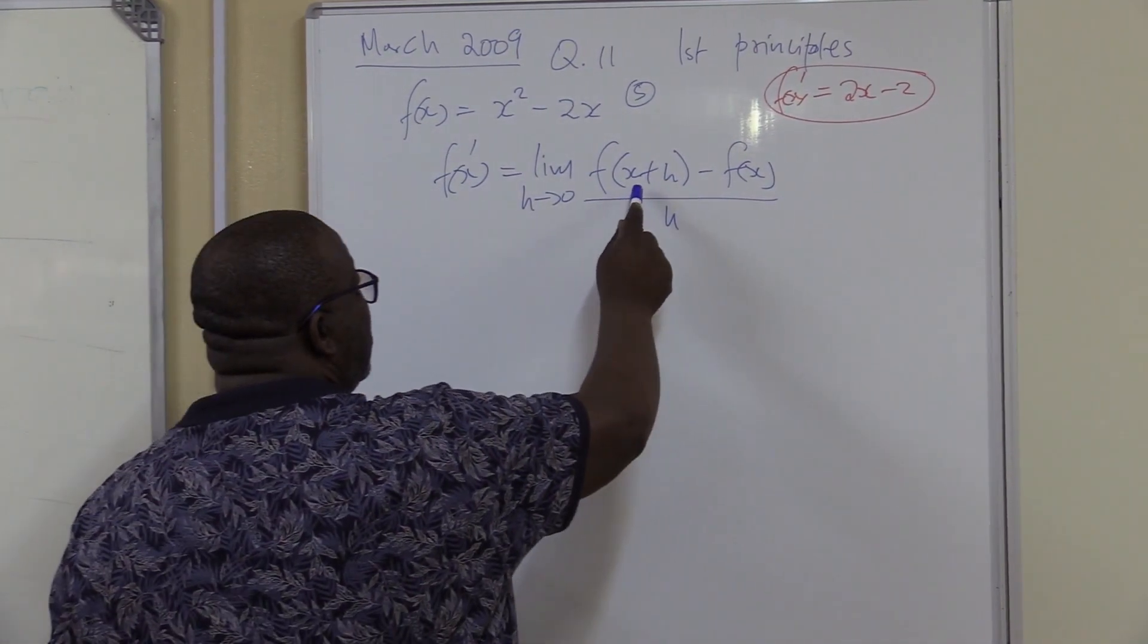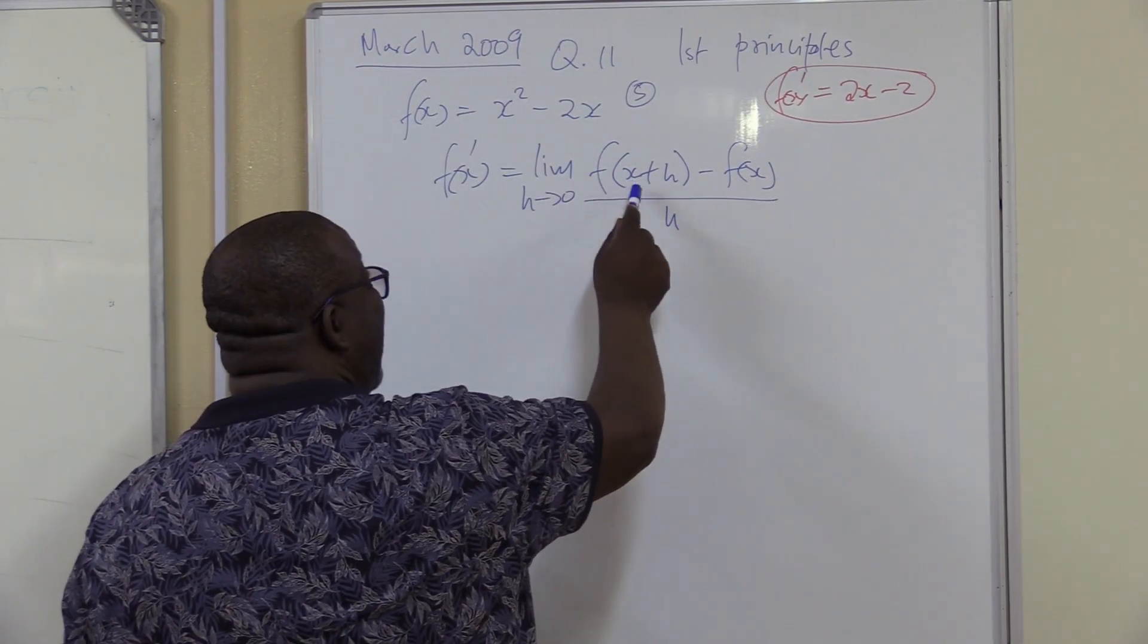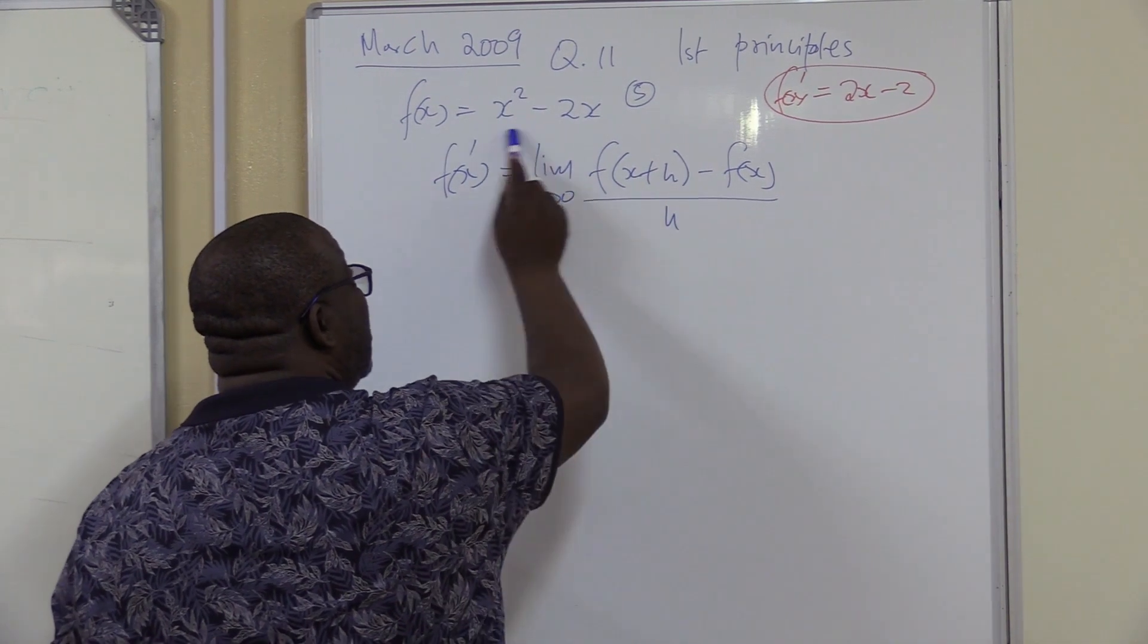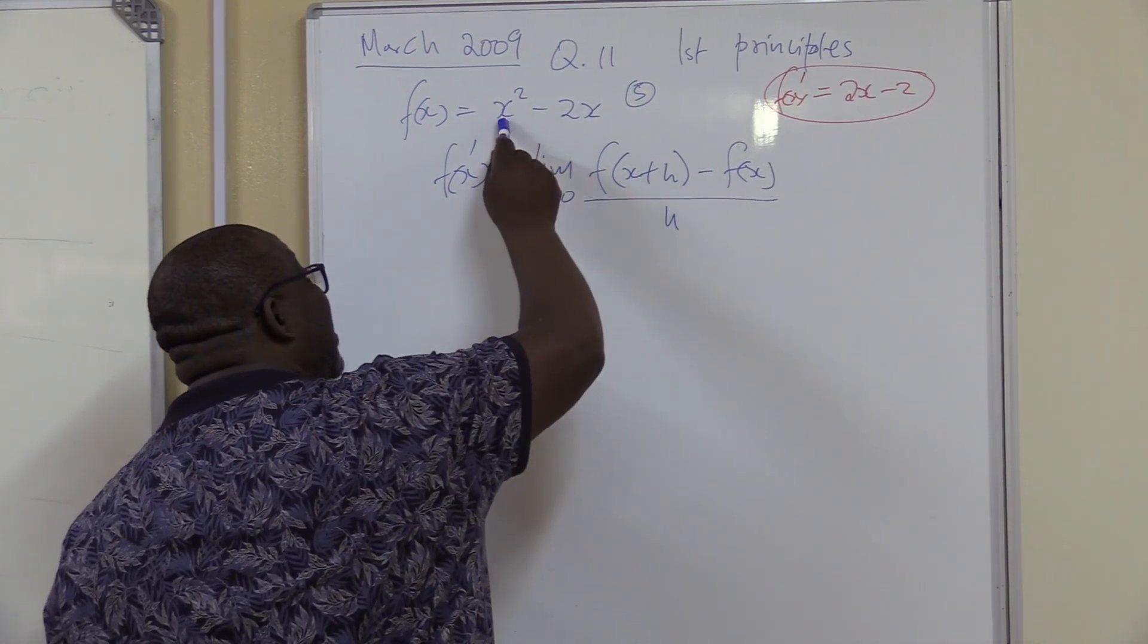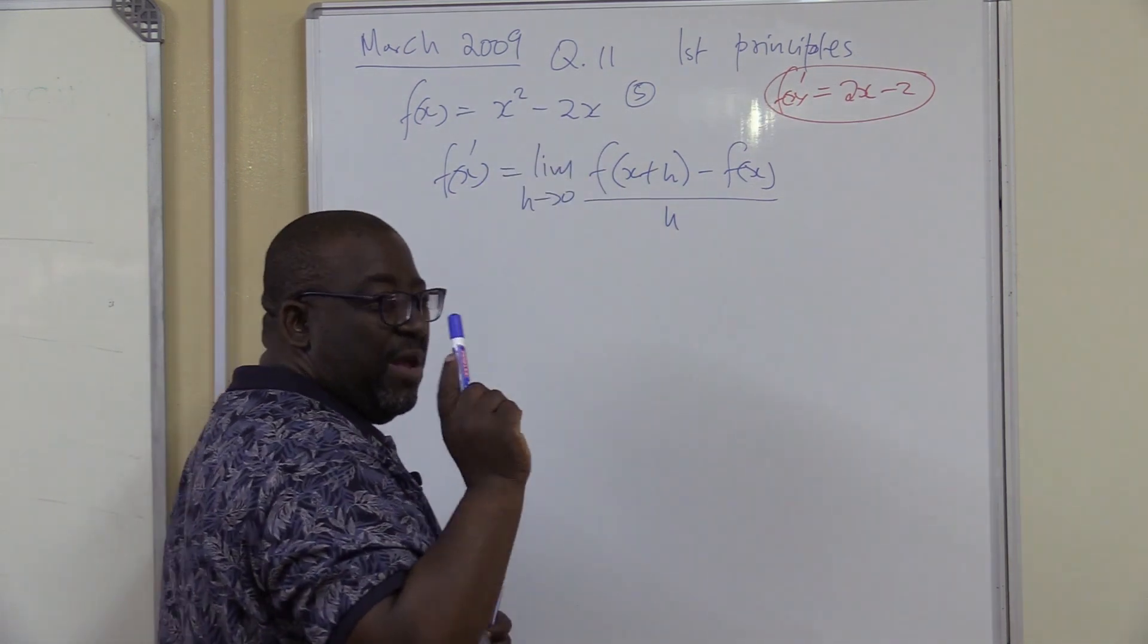Remember, the first thing you put where there was x, now there's x plus h. Remember, x is in two places in this particular case. So wherever I see x, I'll put in x plus h. I see x here and I see x there. That's the first step.